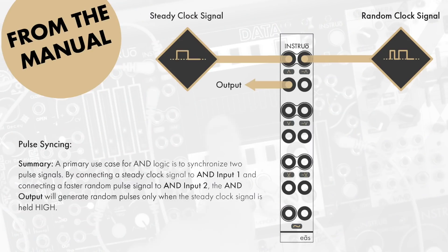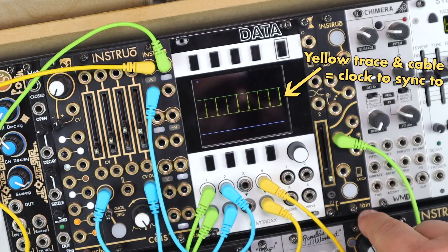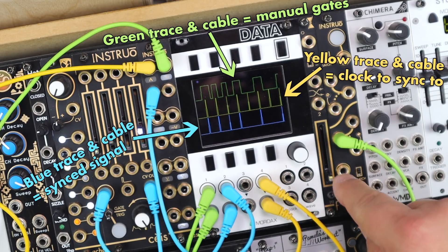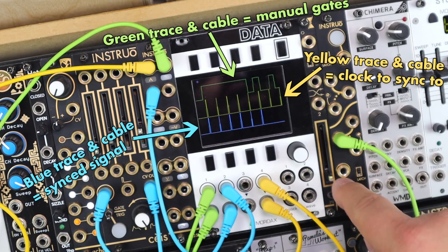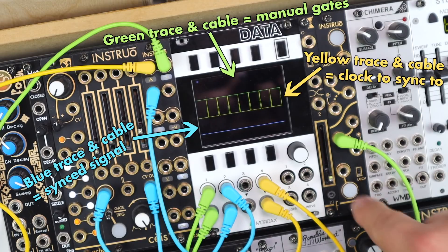Because AND logic will only give an output when both of its inputs are high, we can use that as a pulse synchroniser — a timing quantiser of sorts. I'm using a simple clock as an audible metronome for this patch, and a manual gate. No matter how frantically and out of time I tap that button, it will only let an output through when it lines up with that clock signal.